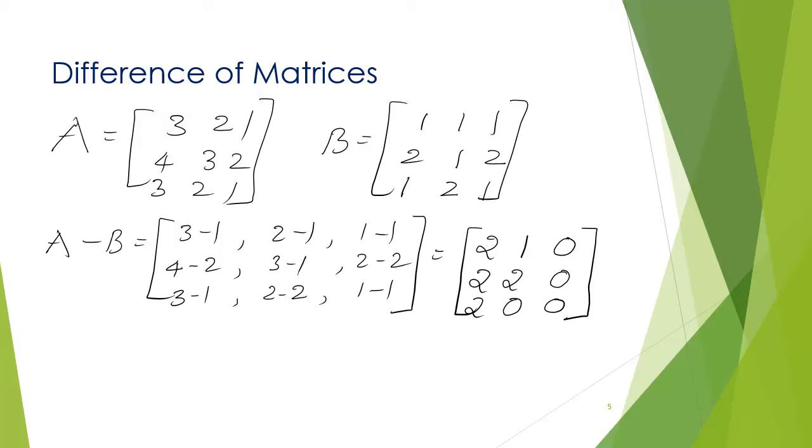So, in order to find A minus B, we get 3 minus 1, 2 minus 1, 1 minus 1, 4 minus 2, 3 minus 1, 2 minus 2, 1 minus 1. What actually we are doing here? Look at the first matrix. First row, first column element. This is subtracted with first row, first column of matrix B. So, we get 3 minus 1. Similarly, it follows.